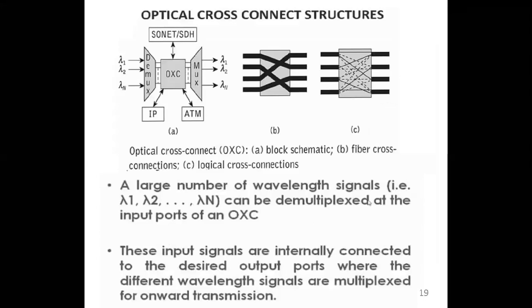Let's look at the OXC structures. In figure A, a large number of wavelength signals - N wavelengths - are getting demultiplexed on the left-hand side, and on the right-hand side they are getting multiplexed. The left-hand side is the input port of the OXC and the right-hand side is the output port. The OXC is basically working as an N×N switch internally, where input signals get connected to desired output ports.